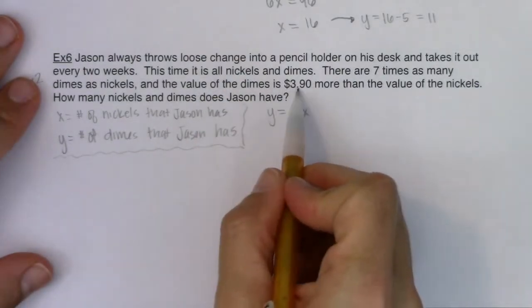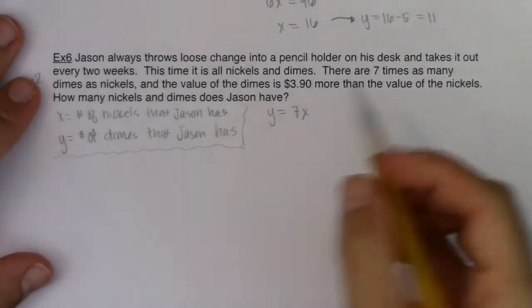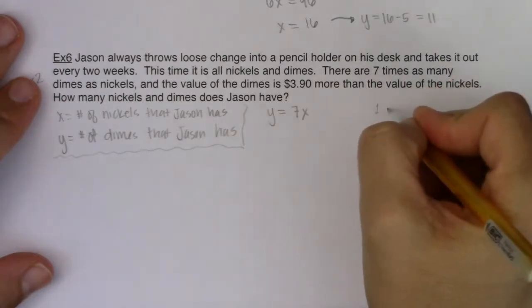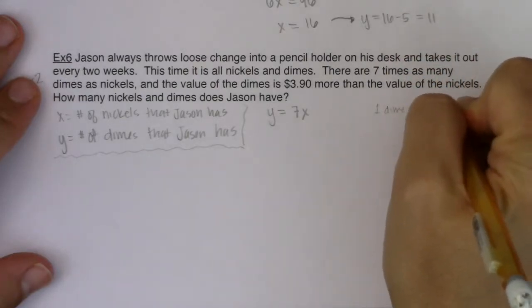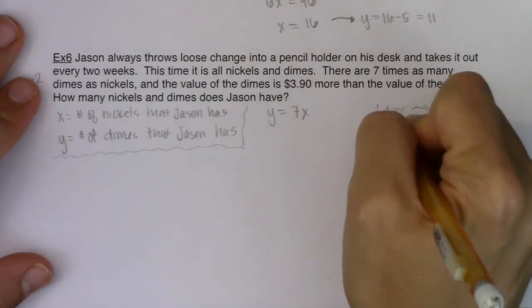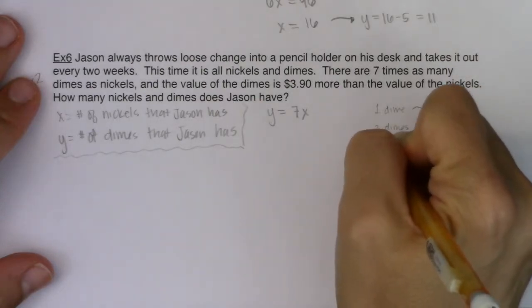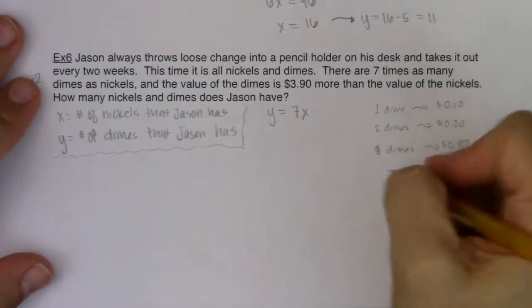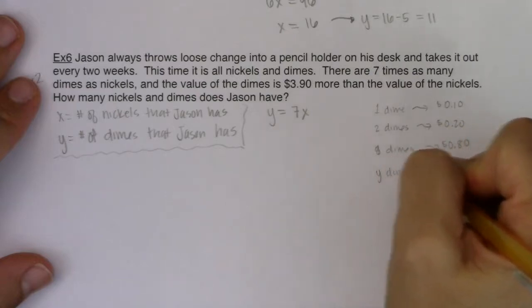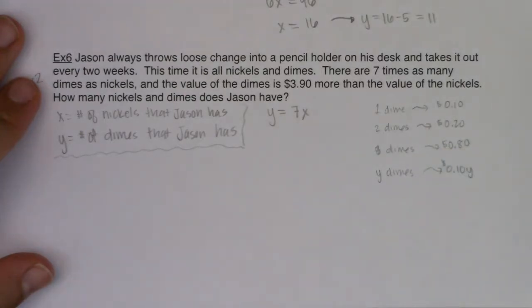Alright, it also says the value of the dimes is $3.90 more than the value of the nickels. So let's think about this. If you had one dime, what was its value? You would tell me you had about 10 cents. If you had two dimes, you would tell me you had 20 cents. If you had eight dimes, you would tell me you had 80 cents. So if you have Y dimes, you would have 0.10Y dollars. That's the value that those dimes would have.